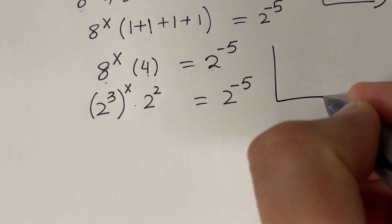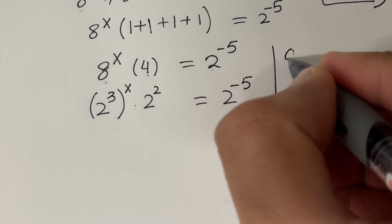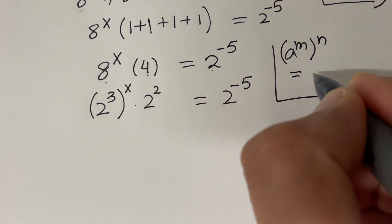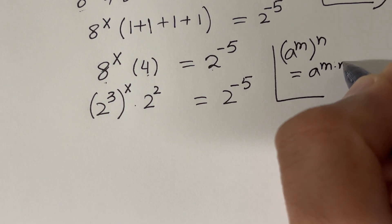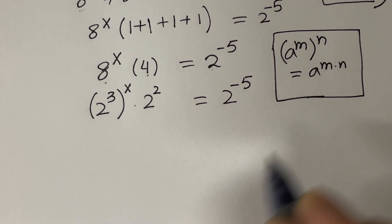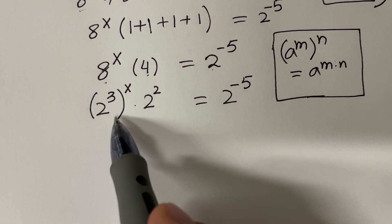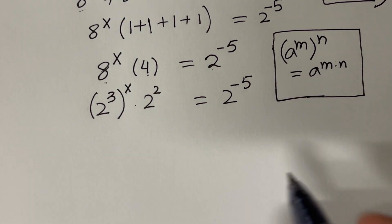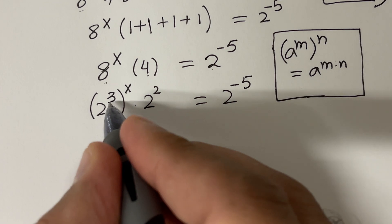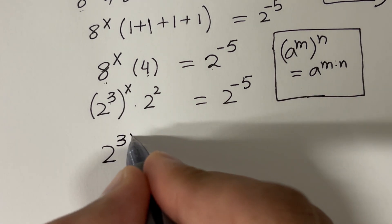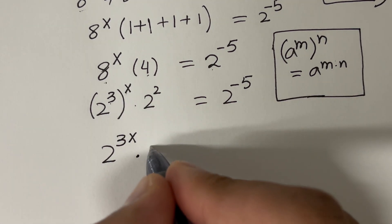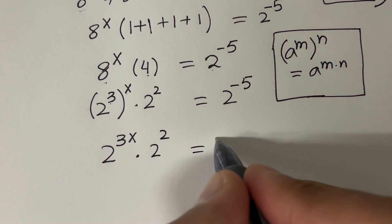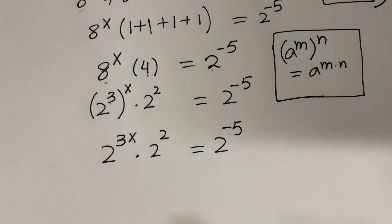We use the property that a raised to the power m, raised to the power n, equals a raised to the power m times n. If we have a raised to the power m raised to the power n, just multiply the exponents. So 3 times x is 3x, and we have 2 raised to the power 2 on the left, while the right hand side is 2 raised to the power minus 5.